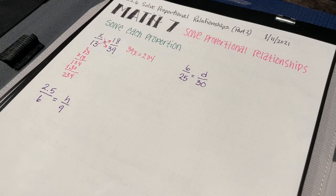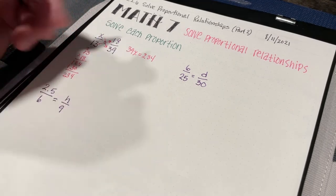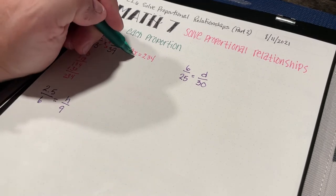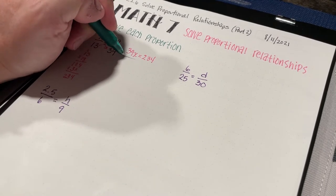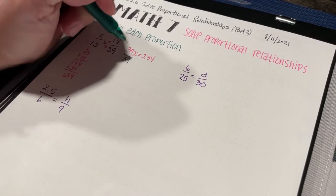My next step is to figure out what x is. I'm going to divide both sides by 39.